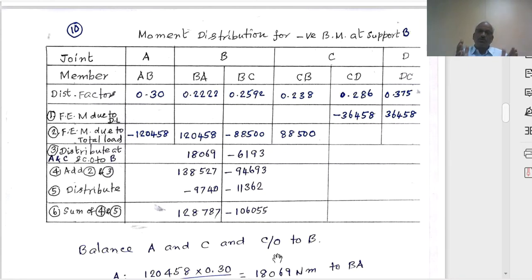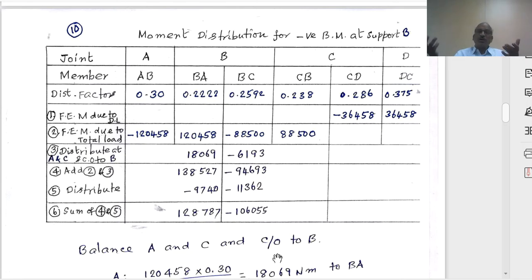As discussed earlier, in a multi-storied multi-bay frame we take only one floor with the columns above and below. When we take some intermediate span, we consider only two spans on either side for the analysis, because the load from other spans will not interfere with this moment. For moment distribution we stop with only two distributions and two carry-overs. When considering a particular support, only the moments that contribute to that particular member or support are written.